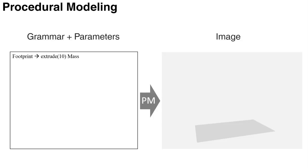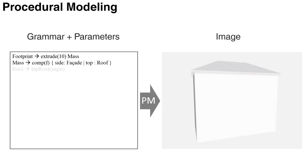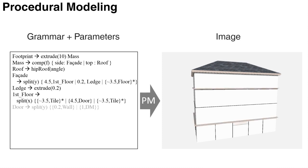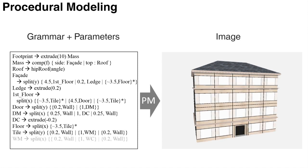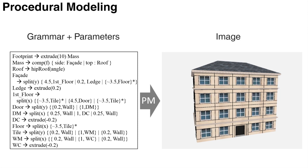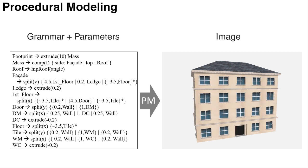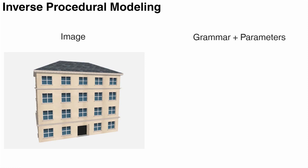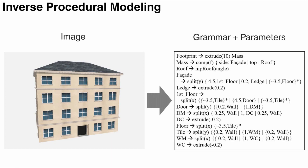Procedural modeling is a powerful technique to generate parametric 3D geometry. Once a grammar is defined, a 3D geometry can be generated by executing the derivation of the grammar and a 2D image is rendered as a result. By changing parameter values, a wide variety of building images can be rendered easily. However, creating such a grammar requires professional knowledge and it is tedious work even for expert users. To address this issue, our goal is to generate the grammar and parameters from a 2D image. This problem is called inverse procedural modeling.